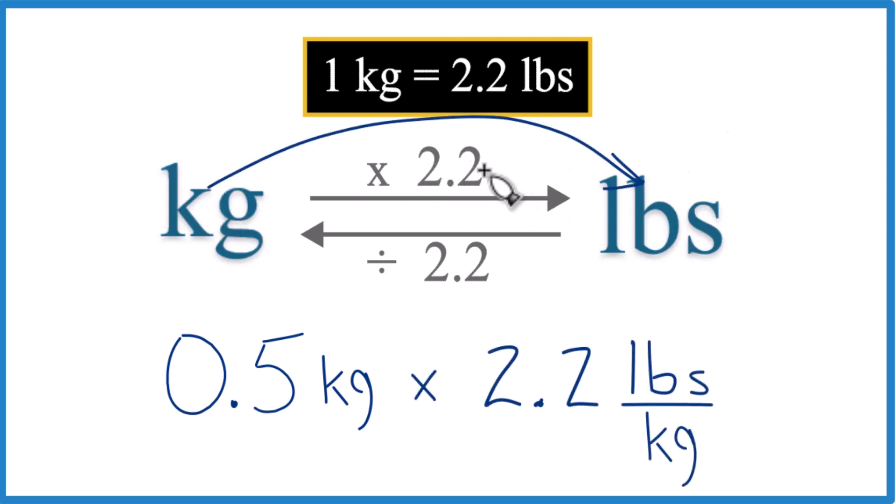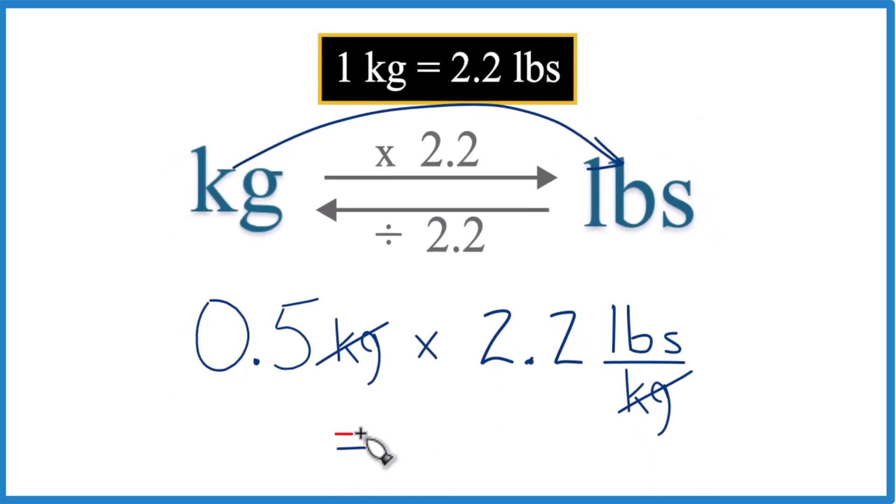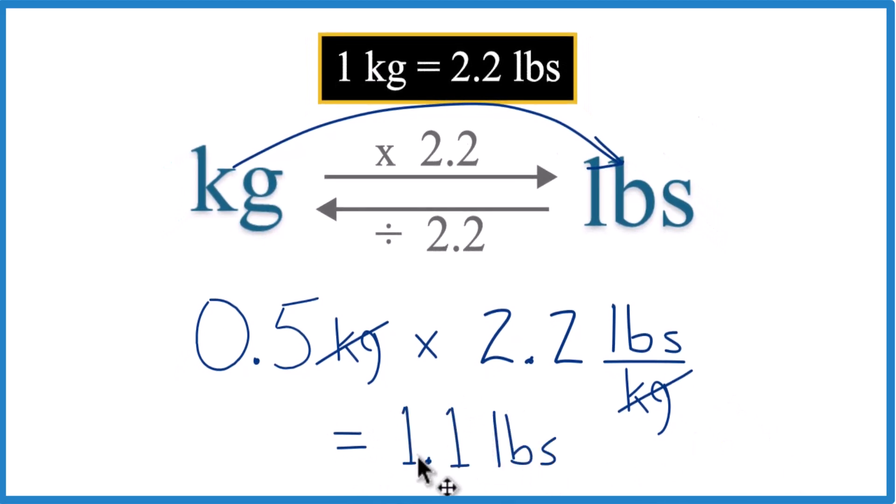Kilograms to pounds multiply by 2.2. That's 2.2 pounds per kilogram. When we do the multiplication, we end up with 1.1 pounds. All right. Not too bad, right?